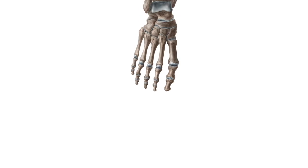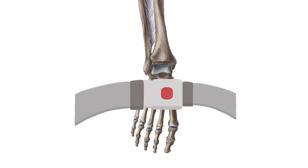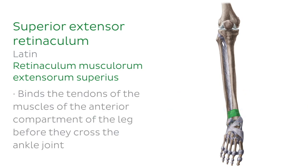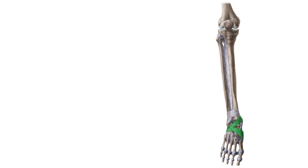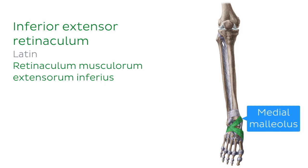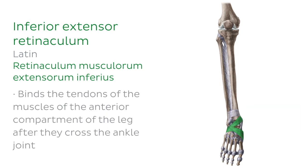Retinacula are fibrous bands that act like seatbelts for the tendons of your muscles — they hold them in place so they can't move around freely under your skin. The superior extensor retinaculum passes from the fibula to the tibia, proximal to the malleoli, and binds the tendons of the muscles of the anterior compartment before they cross the ankle joint. Moving inferiorly, the inferior extensor retinaculum is Y-shaped, running from the calcaneus — the largest tarsal bone of the foot — and splitting to attach to the medial malleolus and the plantar aponeurosis. It binds the tendons of the anterior compartment muscles after they cross the ankle joint.